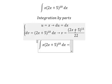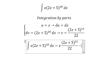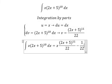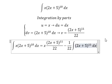So we have u multiplied by v, minus the integral of v du. We have 1 over 22 here, and we have the integration of (2x+5)^11 dx.